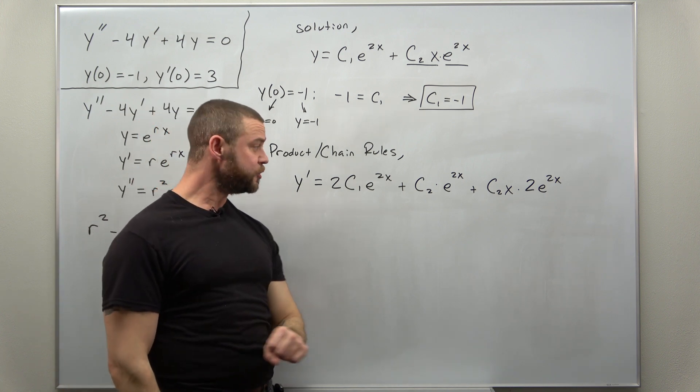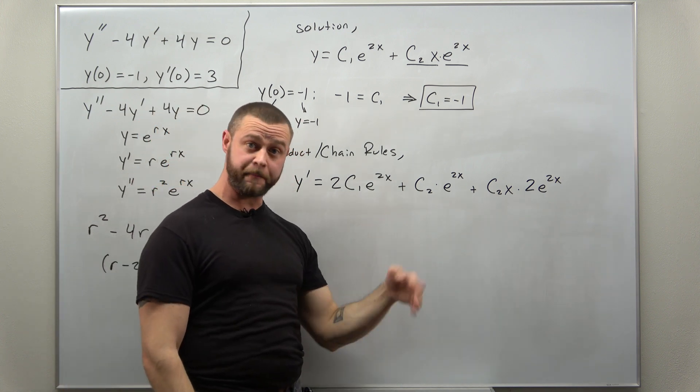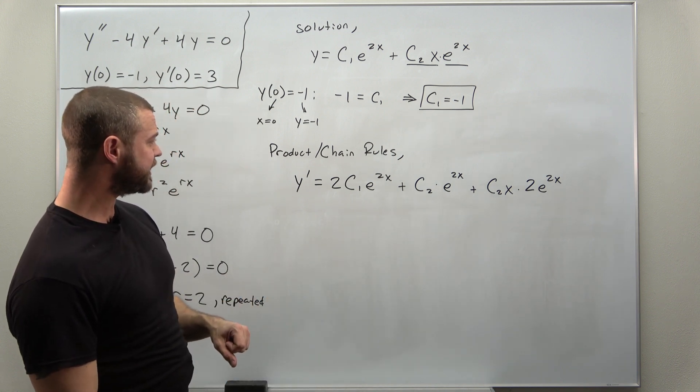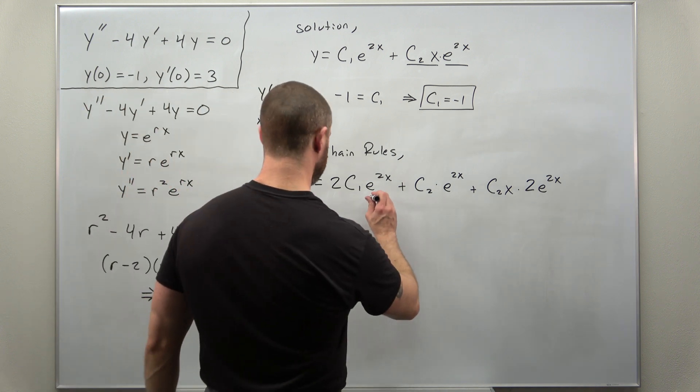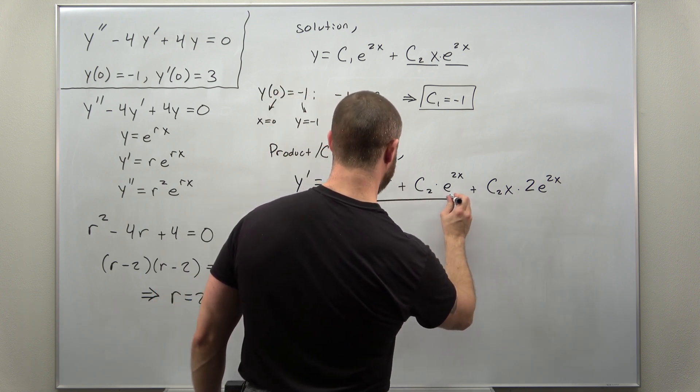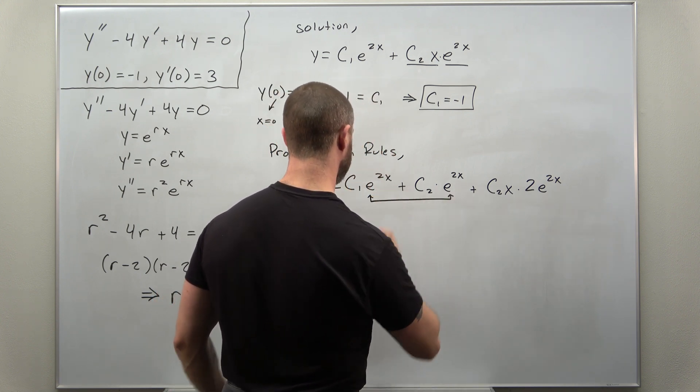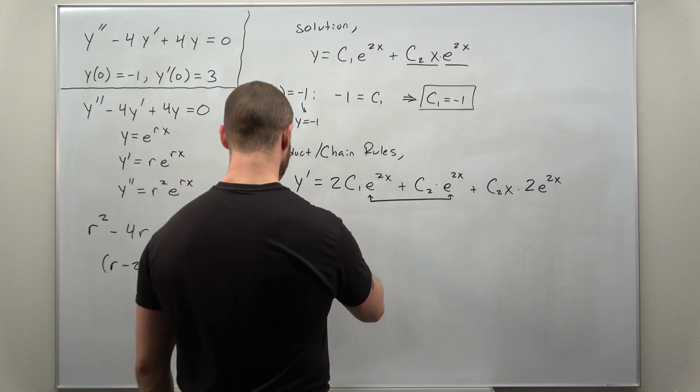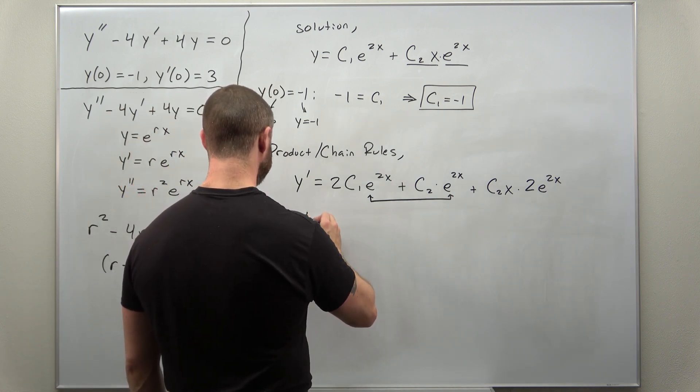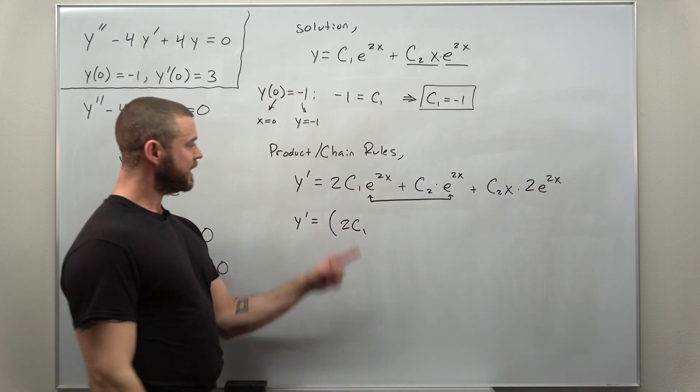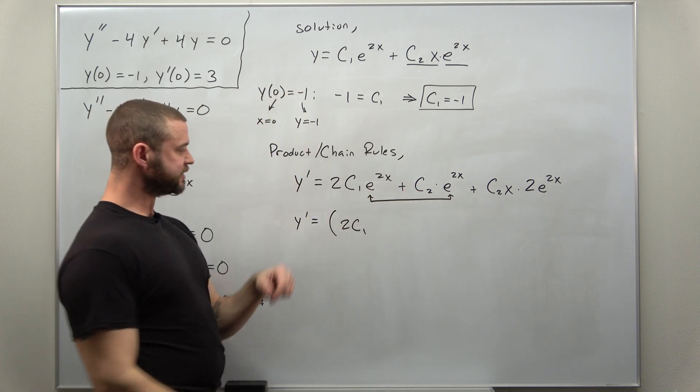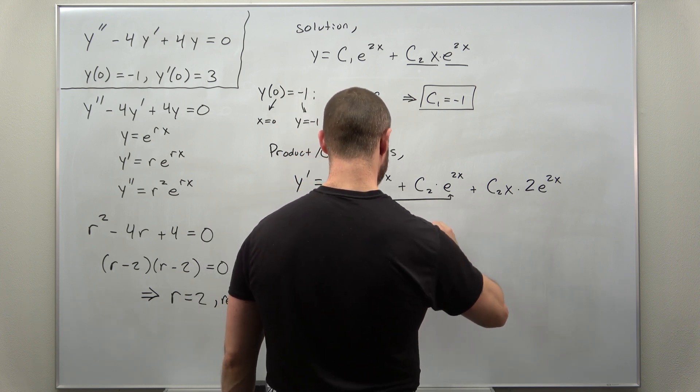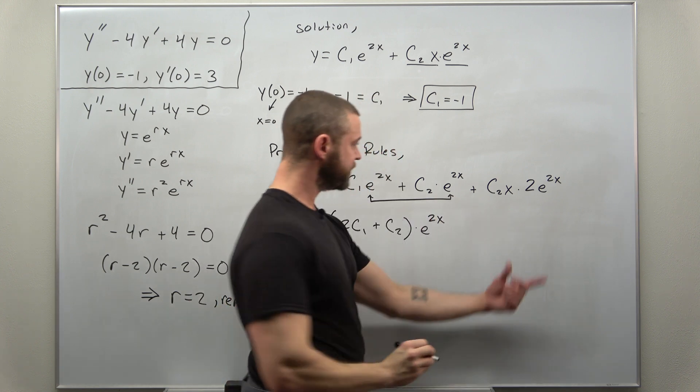A good habit to get into is to try to simplify your solution before proceeding, and it looks like we do have some like terms. We have our pure exponential terms here and we're gonna basically factor out e to the 2x.